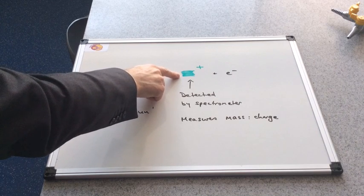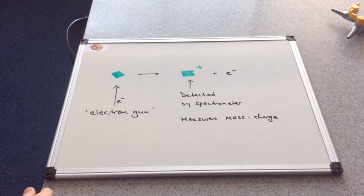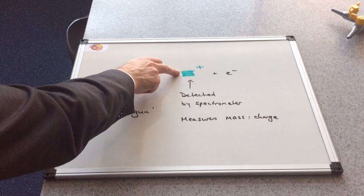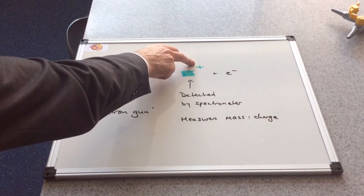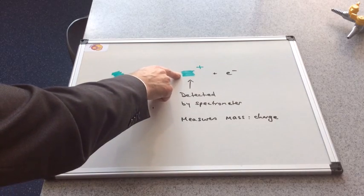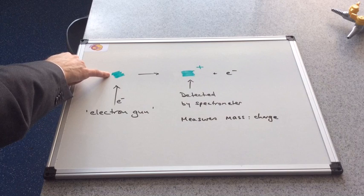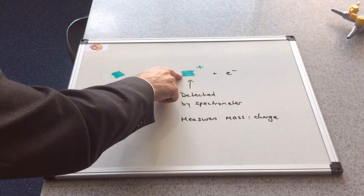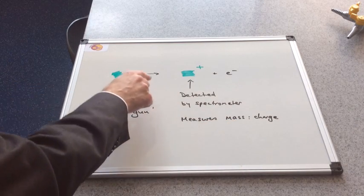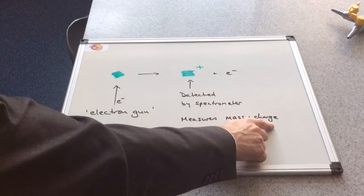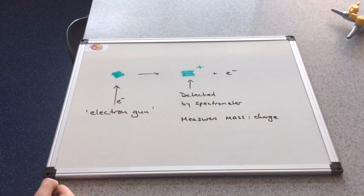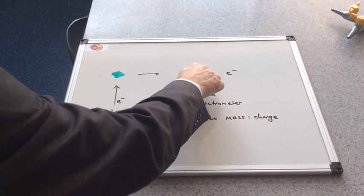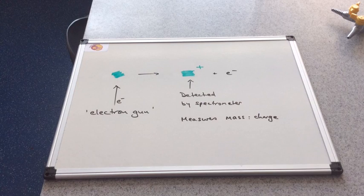If this form of the isotope is what's detected by the spectrometer, what it measures is the mass to charge ratio. The spectrometer is measuring the mass of this particle and dividing it by the charge. Because the mass of this ion is virtually identical to the mass of the original atom—the only difference is an electron with negligible mass—when we divide the mass by the charge of one plus, we just get the original number. The mass of this ion is effectively the mass of the isotope we started with.